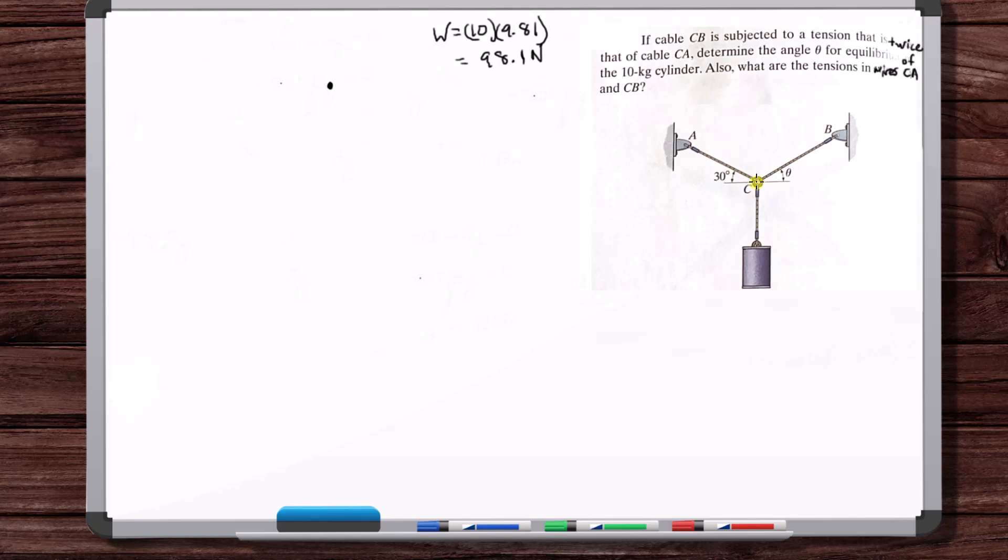All right, let's do a free body diagram of this ring here. We can draw it as a point like this. Let's put our XY coordinate system, the origin going through this point. We don't have to put the origin going through the point. It would work if we put it out here too. But let's just put it here.